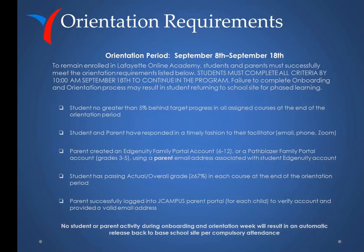The student must have a passing actual and overall grade greater than 67% in each course at the end of the orientation period. The parent must have successfully logged into JCampus Parent Portal for each child to verify the account and provide a valid email address. No student or parent activity during onboarding and orientation week will result in an automatic release back to the base school site per compulsory attendance.